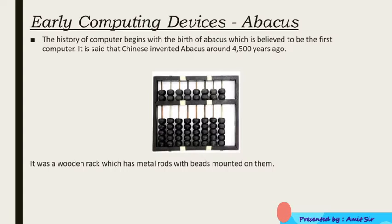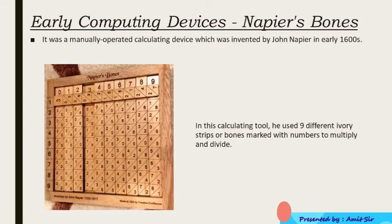The next early computing device is called Napier's Bones. It was a manually operated calculating device which was invented by John Napier in the early 1600s. In this calculating tool he used nine different strips and bones marked with numbers to multiply and divide. In order to use Napier's Bones, a person needs to know only how to add and subtract.